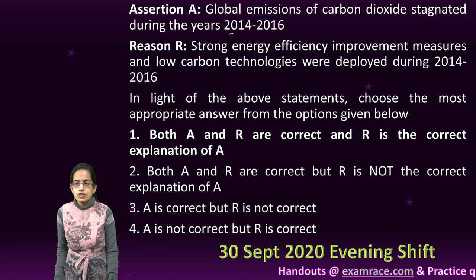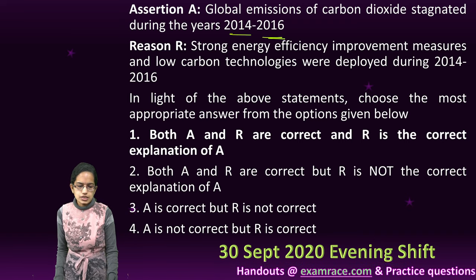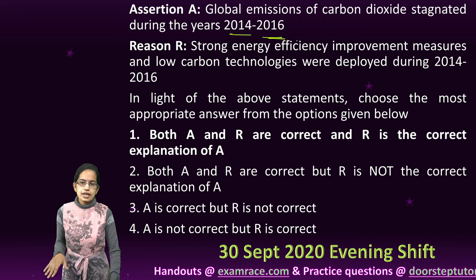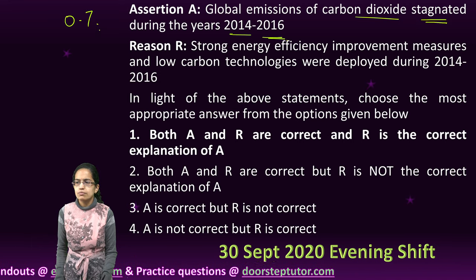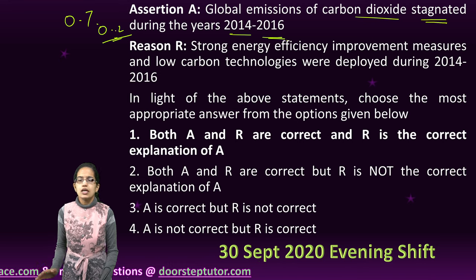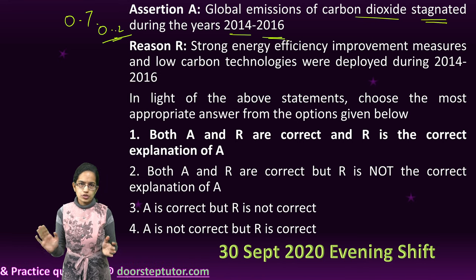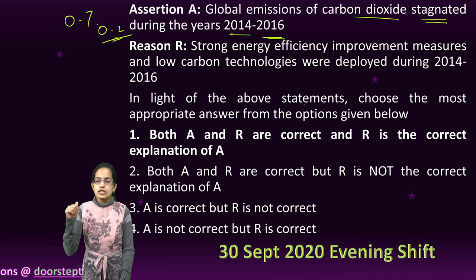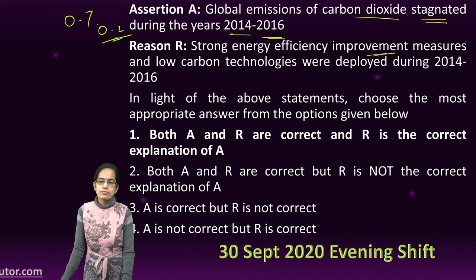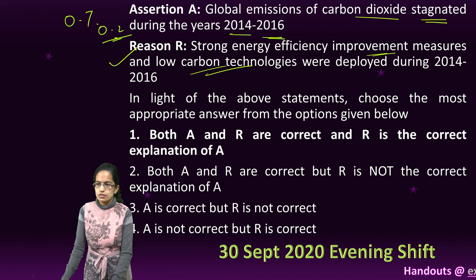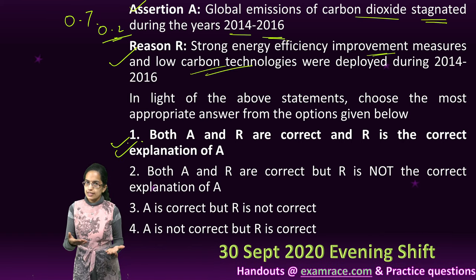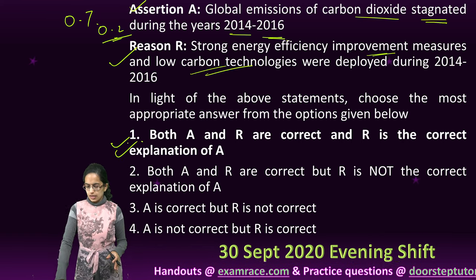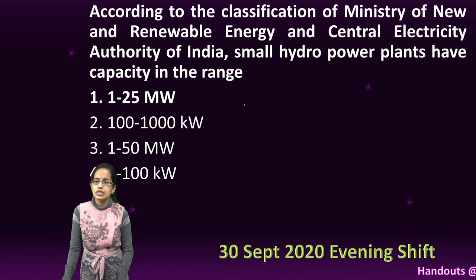The next question: over the years from 2014 to 2016, carbon dioxide emissions have stagnated — that is correct. It was 0.7 percent, then 0.2 percent for 2014, 2015 and 2016. Strong energy efficiency improvement measures and low carbon technologies have been responsible for this. So both assertion and reason are correct, and the reason is the right explanation for the assertion.